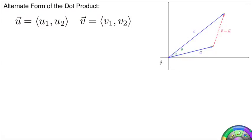Whether you start off with the alternate form and go back to the u1 v1 plus u2 v2 form, or you go the other direction, well, we're just going to go the other direction.